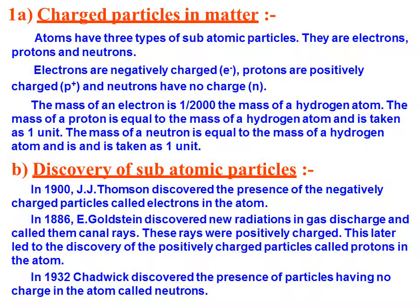Charged particles in matter — atoms have three different types of subatomic particles: electron, protons, and neutrons. Electrons are negatively charged. Protons are positively charged particles. And neutrons have no charge, that means they are neutral. Negatively charged particles are electrons, positively charged particles are protons, and those which have neither positive nor negative charge are termed neutrons.